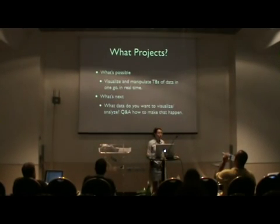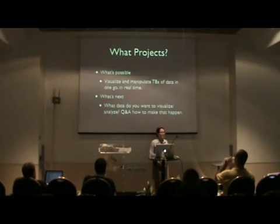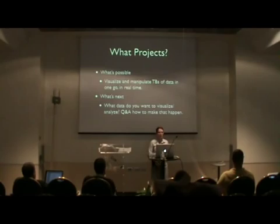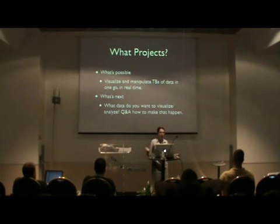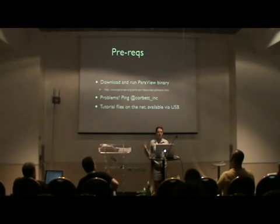We'll play with some data from the web — stellar cluster data that's freely available that we can visualize and manipulate. We'll use filters to do analysis — here's that previous random number generator where I've thresholded by random numbers that lie between 0.75 and 1, so now I only have big blue spheres instead of small reddish spheres. Finally, we'll go over what's possible — I'm welcome to brainstorm with you if you have a data set you're interested in visualizing. It's definitely possible to visualize and manipulate terabytes of data in one go in real time given the computational resources. I've looked at billions of particles and done analysis tasks in real time via ParaView.